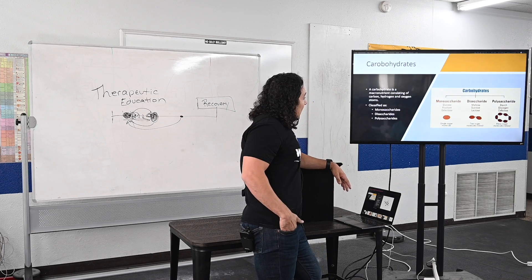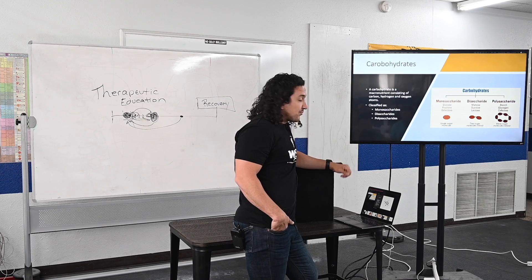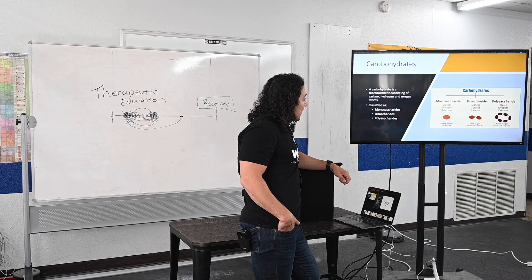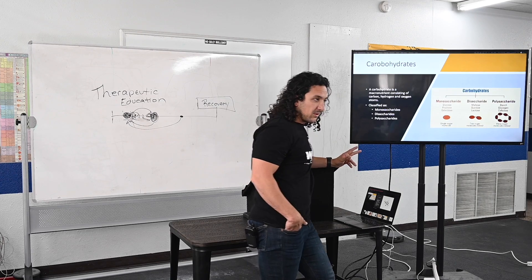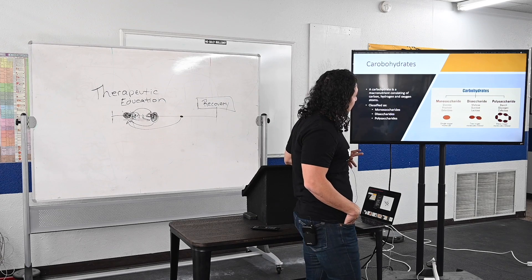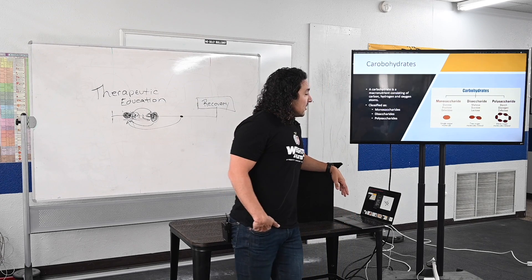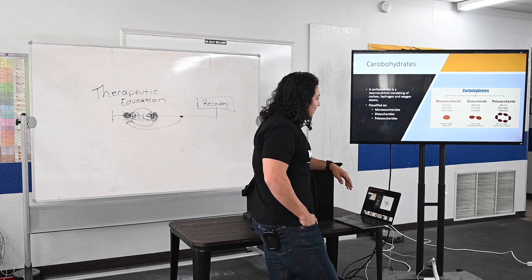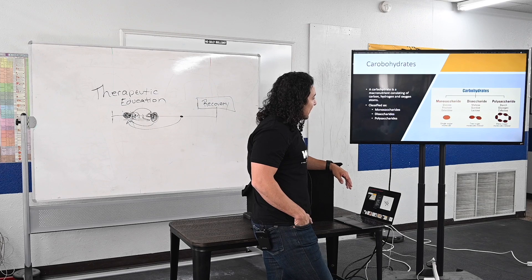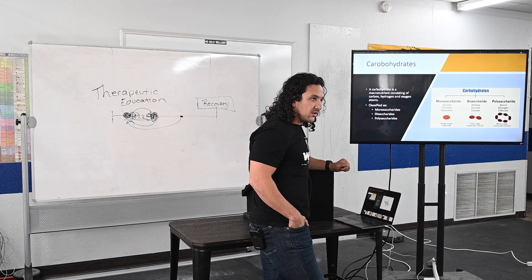Then you have your disaccharides, with di meaning two. Maltose is two glucose molecules; sucrose is a glucose and a fructose unit; and lactose is galactose and glucose.